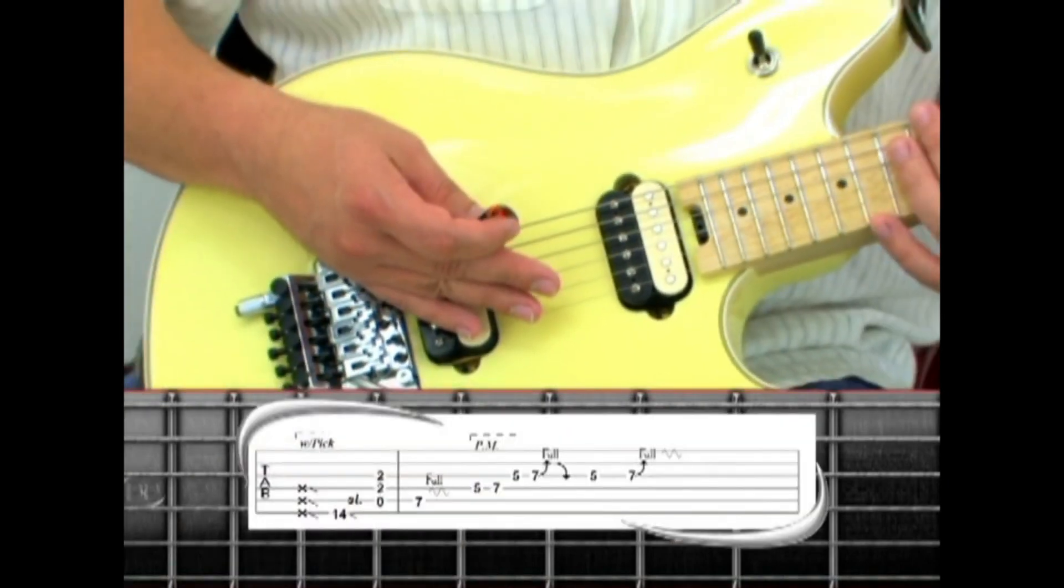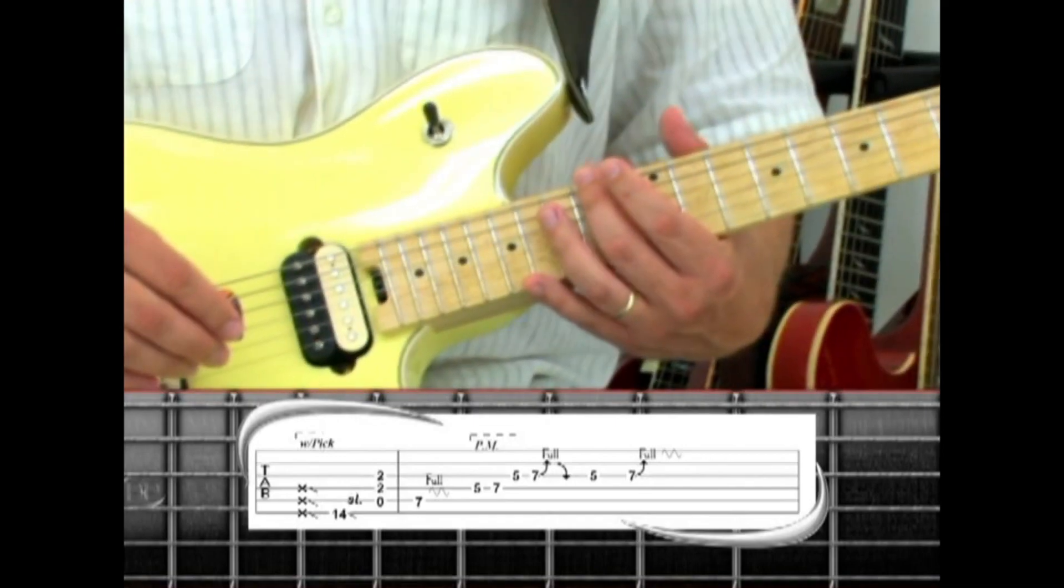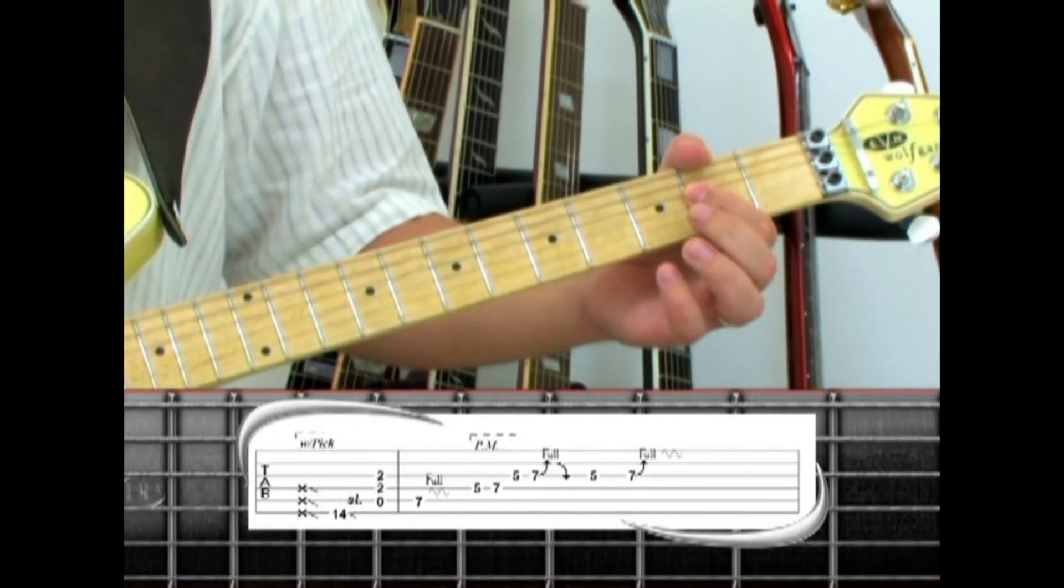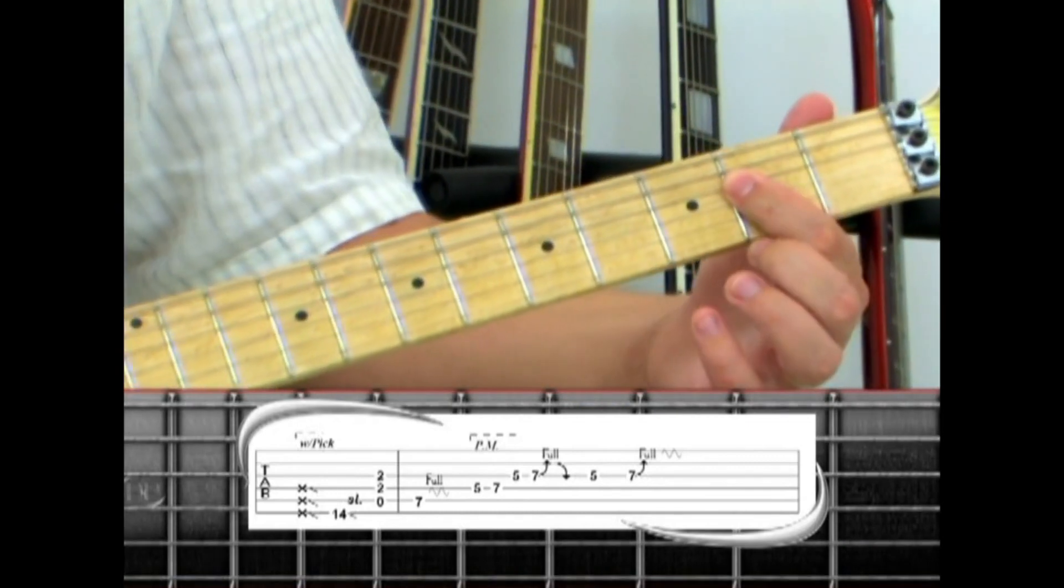Phrase one starts with a pick slide down the neck, followed by a 14th fret slide on the sixth string down to an open A5 power chord. Fifth string open with the fourth and third string second fret.